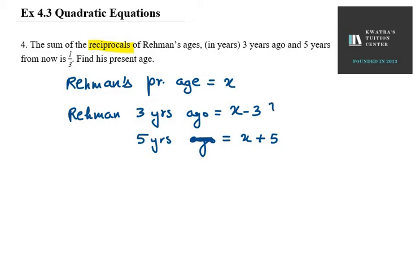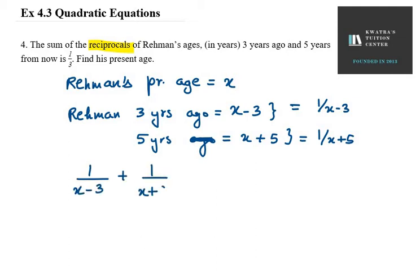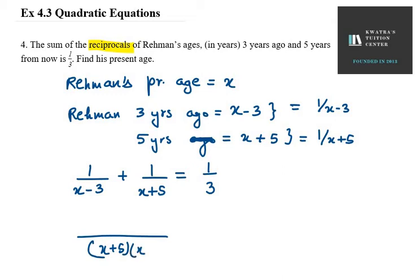The reciprocal of Raman's age 3 years ago is 1 over X minus 3, and the reciprocal of his age 5 years from now is 1 over X plus 5. Both of these sum to equal 1 over 3. So now we have to solve this equation — we take the LCM of the left-hand side.